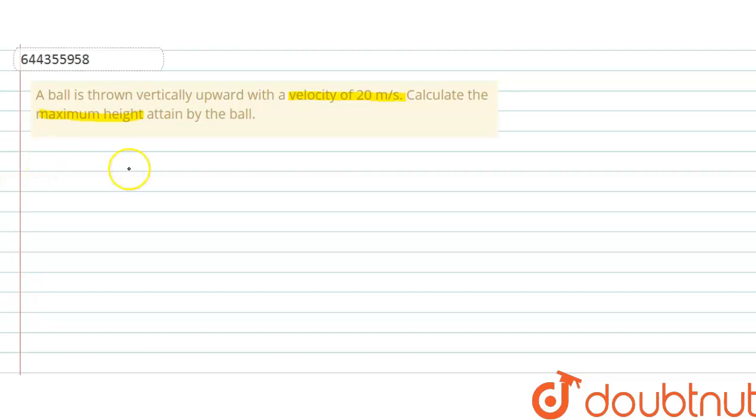So, formula for maximum height, H max, maximum height is u square by 2g, where u is the initial velocity.